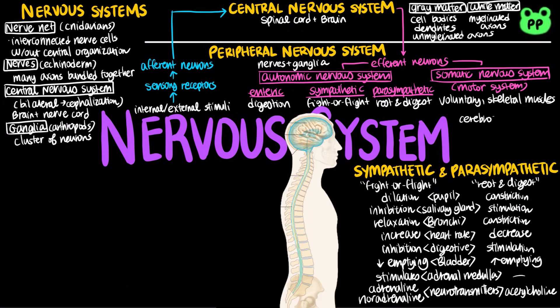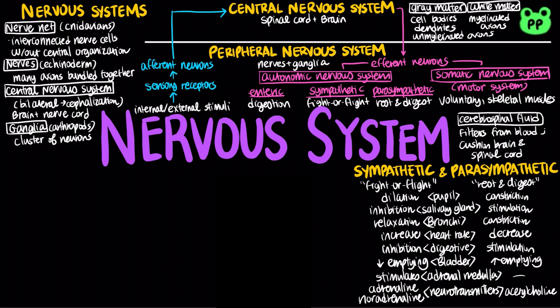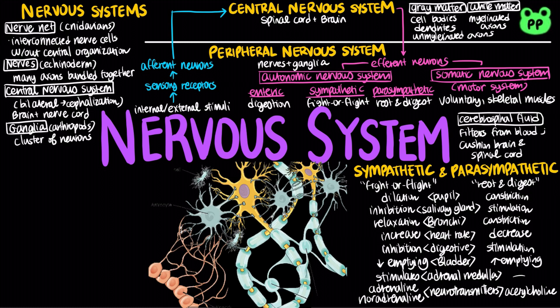The central canal of the spinal cord and the ventricles of the brain are hollow and filled with cerebrospinal fluid, which is filtered from blood and functions to cushion the brain and spinal cord. The nervous system of vertebrates and most invertebrates also includes glial cells, or glia, which have numerous functions.